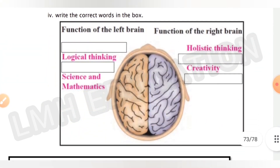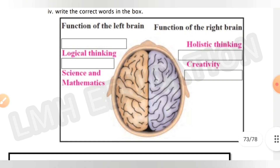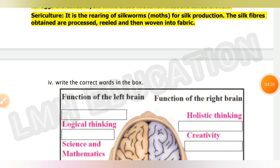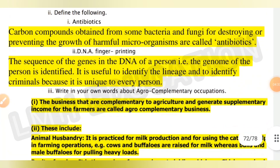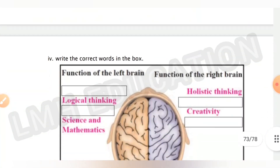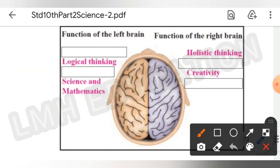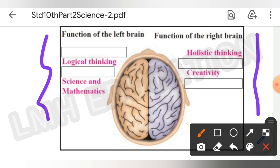Next, write the correct words in the box. The answers shown are: logical thinking, science and mathematics, holistic thinking, and creativity. However, you only need to answer three questions. If you want to answer this question, you can do it yourself.